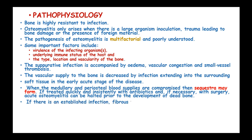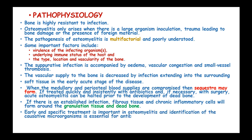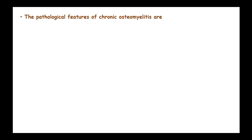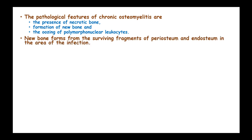If there is an established infection, fibrosis tissue and chronic inflammatory cells will form around the granulation tissue and the dead bone. Early and specific treatment is important in osteomyelitis, and identification of the causative microorganism is essential for antibiotic therapy. The pathological features of chronic osteomyelitis include the presence of necrotic bone, formation of new bone, and oozing of polymorphonuclear leukocytes. The new bone forms from surviving fragments of the periosteum and endosteum in areas of infection.